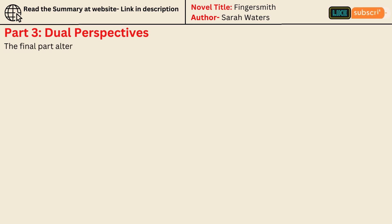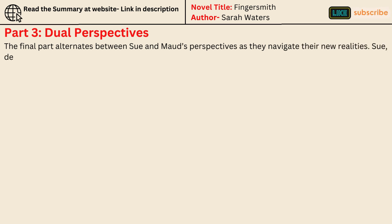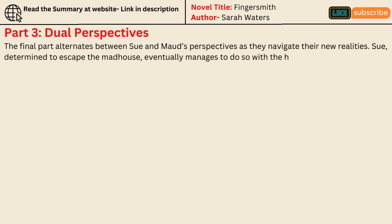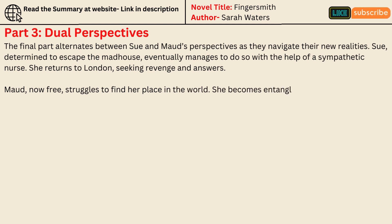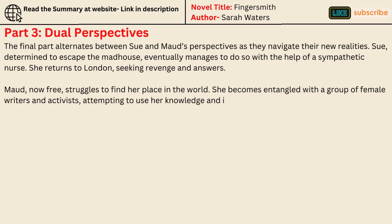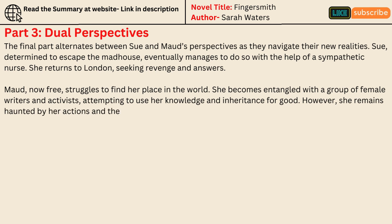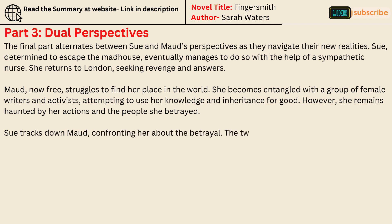The final part alternates between Sue and Maude's perspectives as they navigate their new realities. Sue, determined to escape the madhouse, eventually manages to do so with the help of a sympathetic nurse. She returns to London, seeking revenge and answers. Maude, now free, struggles to find her place in the world. She becomes entangled with a group of female writers and activists, attempting to use her knowledge and inheritance for good. However, she remains haunted by her actions and the people she betrayed. Sue tracks down Maude, confronting her about the betrayal.